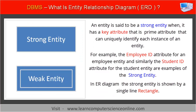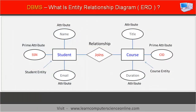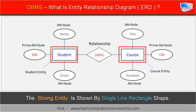A strong entity is one that has a key attribute — that is, a prime attribute — that can uniquely identify each instance of an entity. For example, the employee ID attribute for an employee entity, and the student ID attribute for the student entity, are examples of strong entities. In an ER diagram, the strong entity is shown by a single-line rectangle.